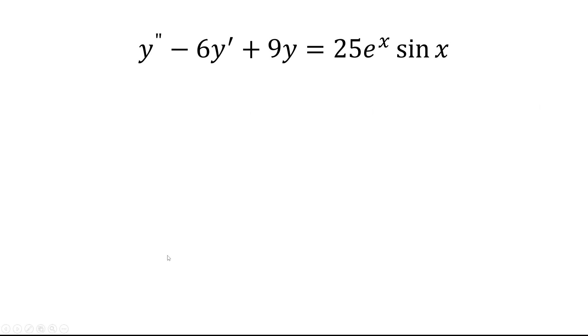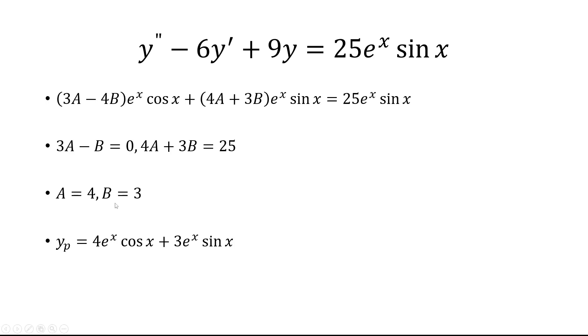So now we go back to what we said y sub p was, and replace a with 4, b with 3. And finally, we add this to the original solution, so the general solution, and we get this as our final answer.